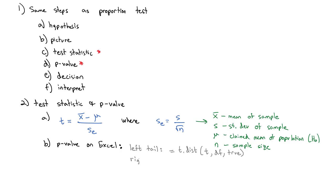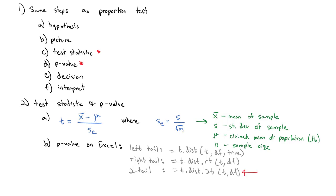For a right-tailed test, we use T.DIST.RT with the t value and degrees of freedom, and that gives us the right tail. For a two-tailed test, we use T.DIST.2T with the t value and degrees of freedom. There is one important note for the two-tailed test: the t value must be positive. So if the t was negative, we change it to positive for the two-tailed test.